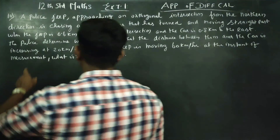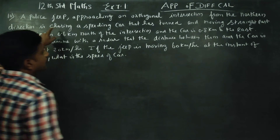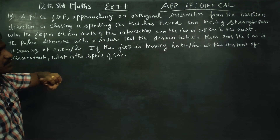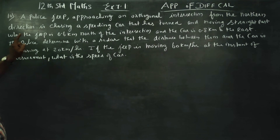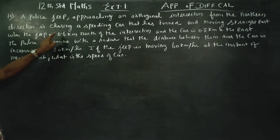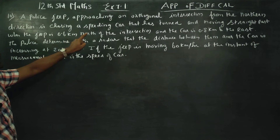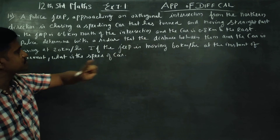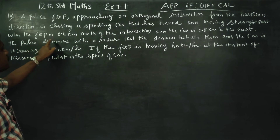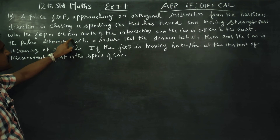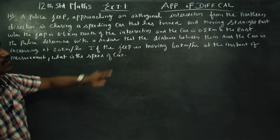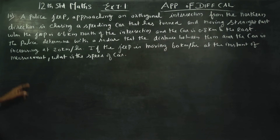A police jeep approaching an orthogonal intersection from the northern direction is chasing a speeding car that has turned and is moving straight east. When the jeep is 0.6 km north of the intersection and the car is 0.8 km to the east.